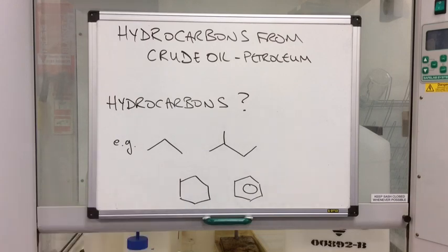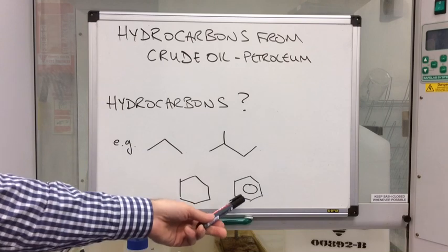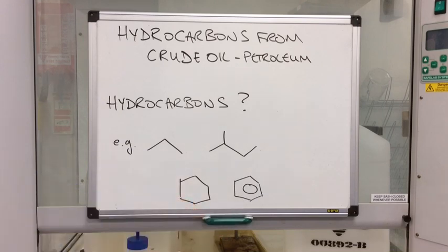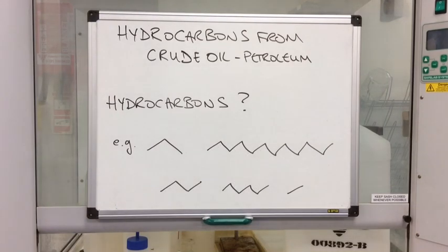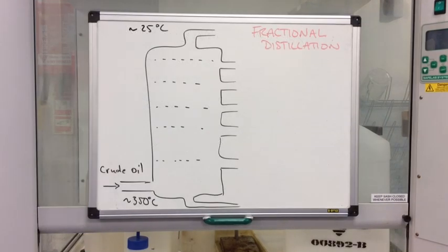There's also a small number of cyclic hydrocarbons, so we've got cyclohexane drawn there. And there are also a small number of aromatic or arenes in crude oil, and that is a picture of benzene. Now the majority of the hydrocarbons in crude oil are the straight-chained alkanes, so that's what we're going to focus on.